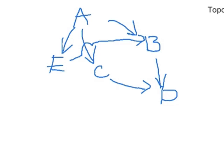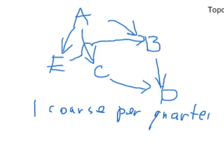That means that clearly we have to first take class A. Following that, we can take class B or C or E, but actually we can't take B because we first have to take E. So the problem is, suppose there is one course per quarter, find the satisfying order.